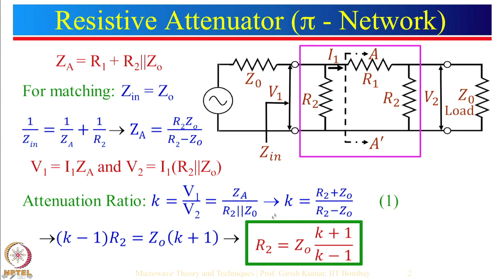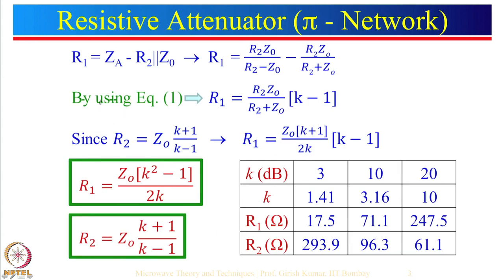From the ratio K we can do simplification, and after a few steps we get the expression for R2, which is Z0 multiplied by (K+1)/(K-1). Expanding further, R1 is Z_a minus (R2 in parallel with Z0) from the previous expression. Using equation 1 and simplifying through a few steps, we get the final expression for R1 and the expression for R2.